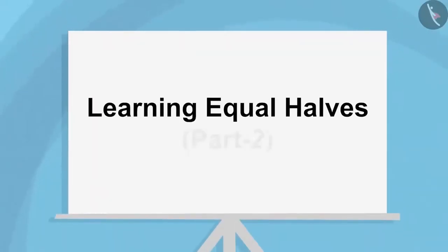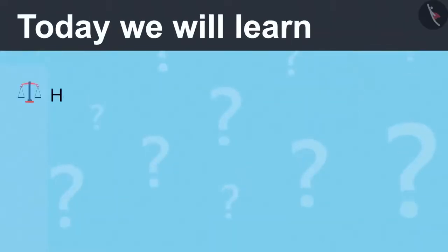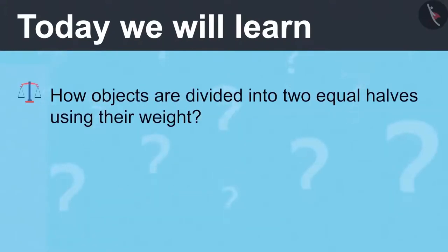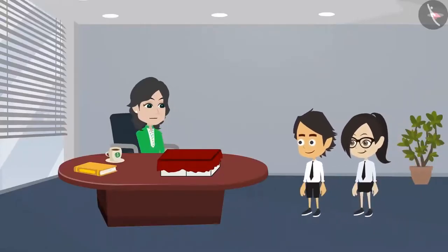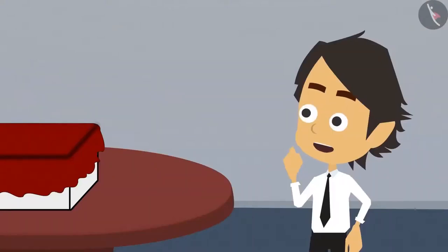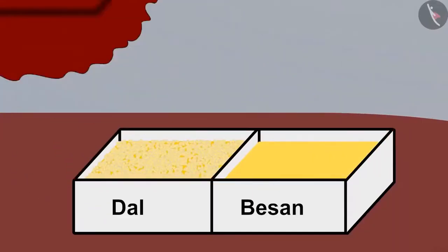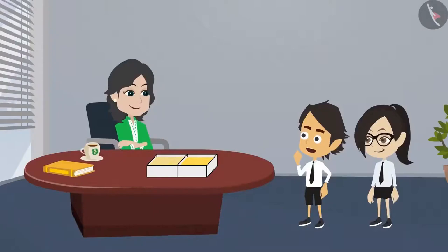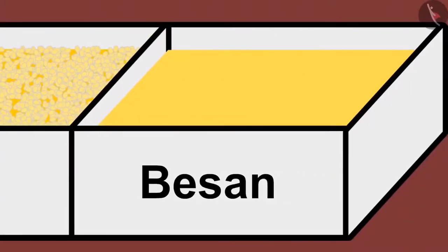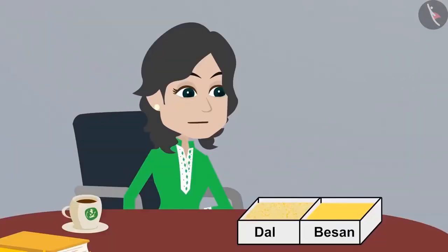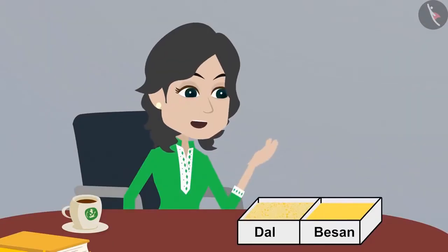Learning equal halves. Part 2. Today we will learn how objects are divided into two equal halves using their weight. Come, Ayushman and Vandana — I knew you both would definitely come. Madam, have you got those objects that we have not learned to divide into two equal halves? Yes, Ayushman, I have got them. Then show them to us, madam. Look Vandana, I have kept those objects here. What is there in this box is dal and besan. Tell me, how will you divide dal and besan into two equal parts?